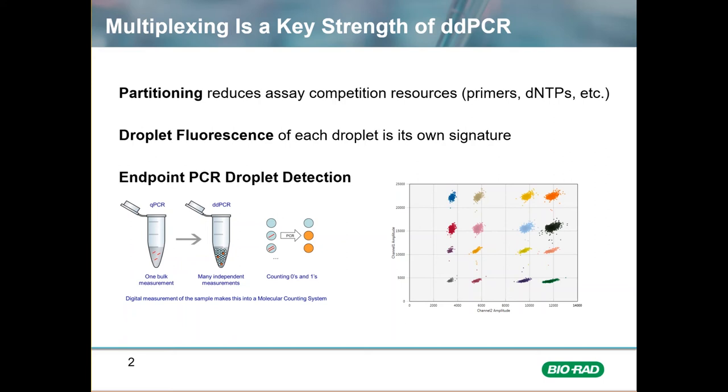Here is a 2D plot with 16 clusters of positive droplets that can be identified with just two fluorescent channels. Finally, detecting the droplets after the PCR reaction is complete, otherwise referred to as endpoint detection, means that differences in efficiency caused by the multiplex will have no impact on the quantification of the sample.